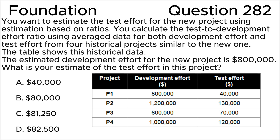A: forty thousand dollars. B: eighty thousand dollars. C: eighty one thousand two hundred and fifty dollars. D: eighty two thousand five hundred dollars.